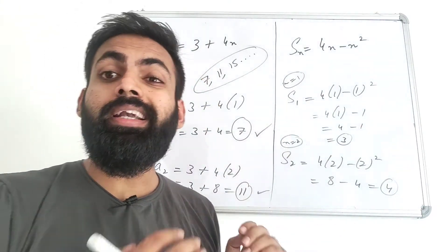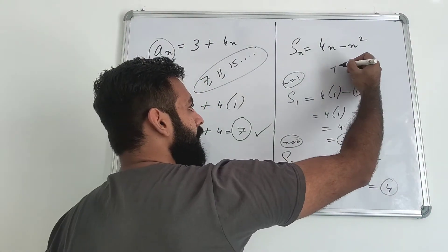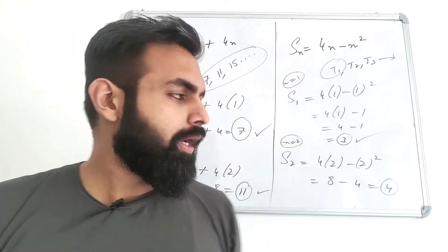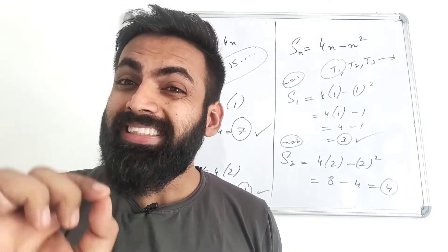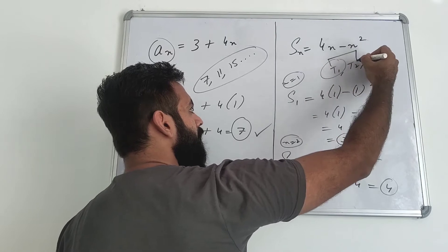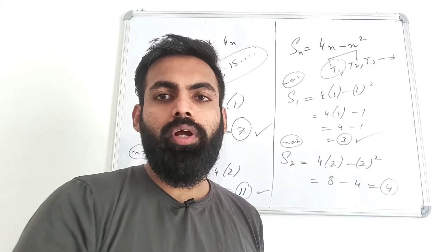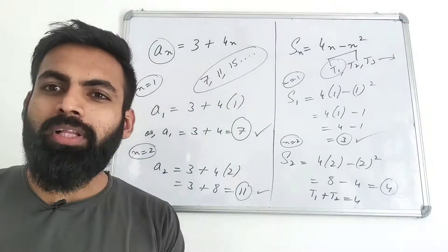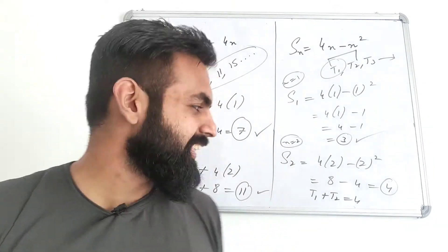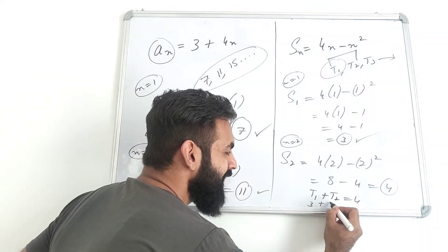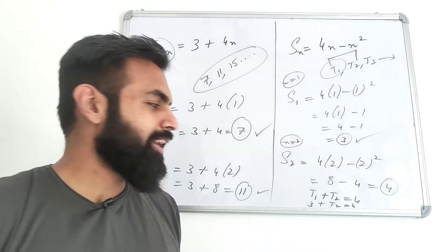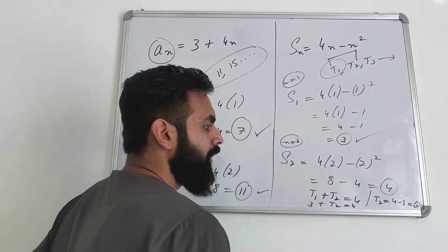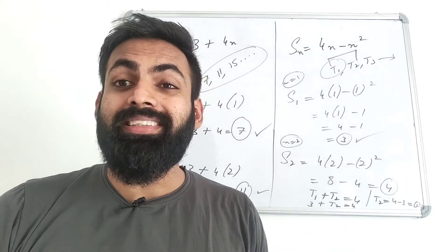What does S1 mean? Sum till first term. If you have AP with T1, T2, T3 and so on, S1 means sum till first term. If S2 equals 4, what does this mean? S2 means sum of first and second term. This means 4 equals T1 plus T2. T1 is present, so T1 is 3 here. T2 equals 4, so T2 equals 4 minus 3, which is 1. So this AP's second term is 1.